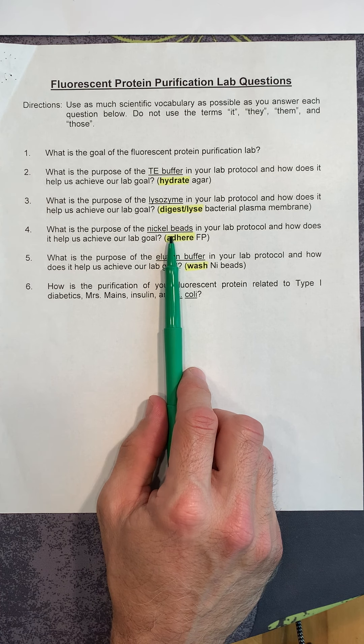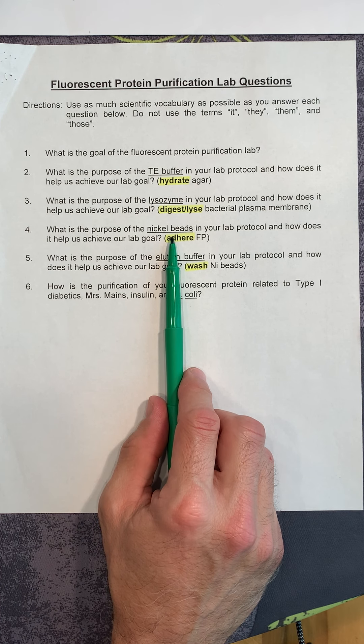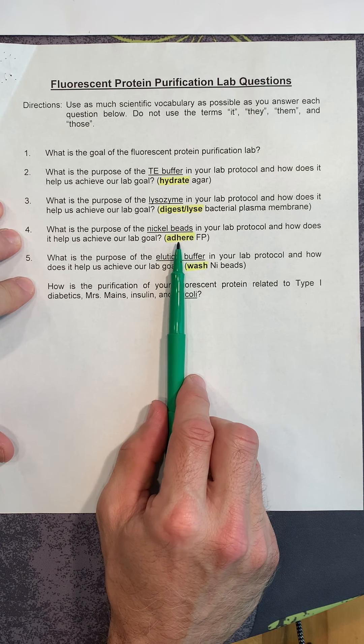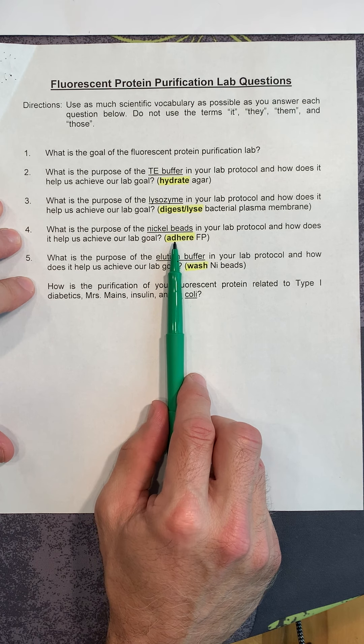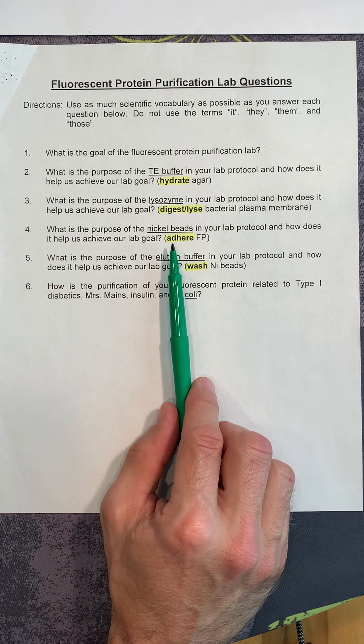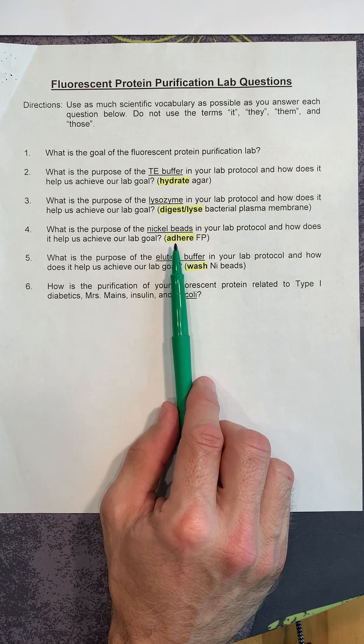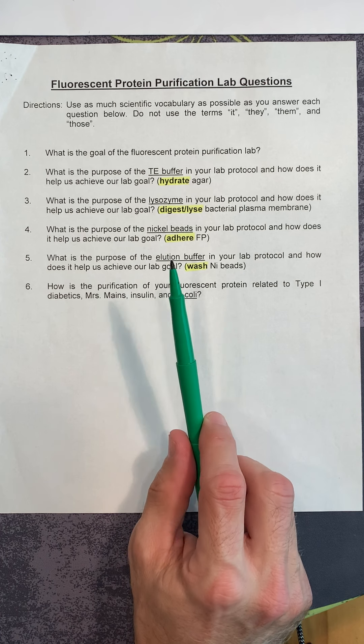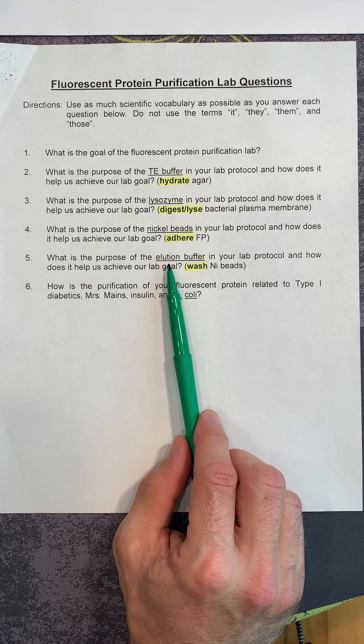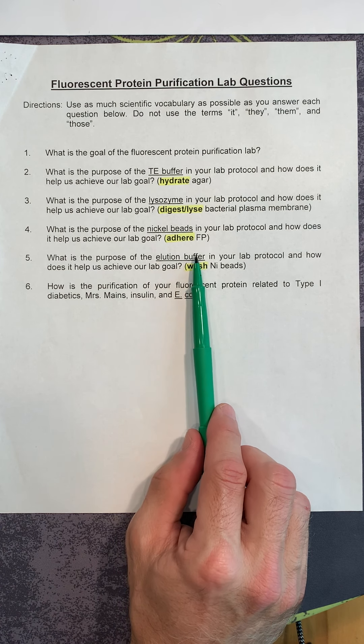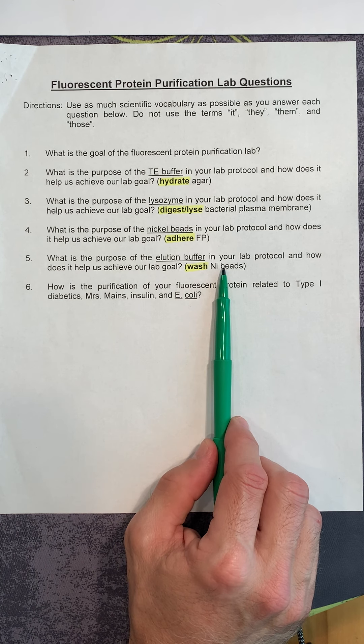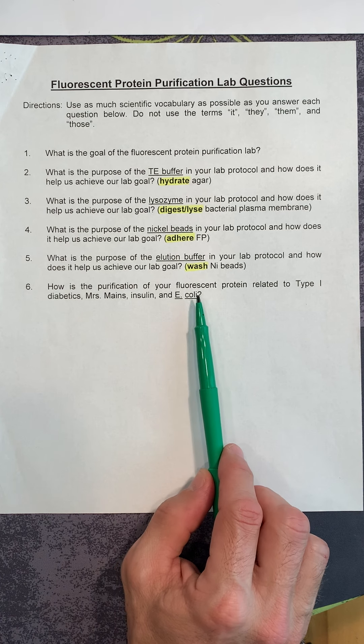Then why the nickel beads? That's when you put the solution that contained the fluorescent protein. You wash that solution over the beads because the fluorescent protein adheres or attaches or sticks to the nickel beads. The vocabulary term that you want to use instead of stick would be adhere. Then why do we use the elution buffer? Elution is from the Latin root elute, which means to wash. We use this buffer because it washes the fluorescent protein off of the nickel beads.